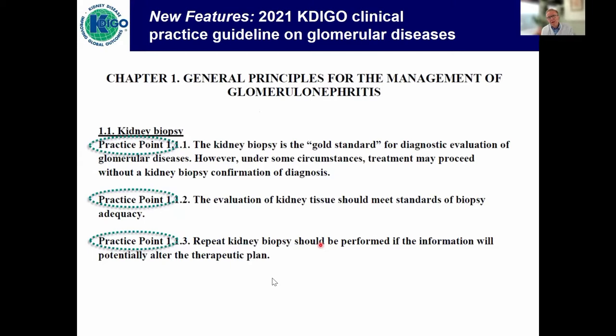A new feature in the guidelines are practice points. KDIGO started out with the aim of making guidelines only based on randomized control trials, which would be ideal. But we have very few or no randomized control trials in many areas, and we felt it's important to stress things that we believe are either plausible or that we feel you should do, even though there is no randomized trial. For example, practice point 1.1.2: the evaluation of kidney tissue should meet standards of biopsy adequacy. This seems plausible, but we wanted to stress it because sometimes diagnoses are made with tiny little cores. This is a new feature.